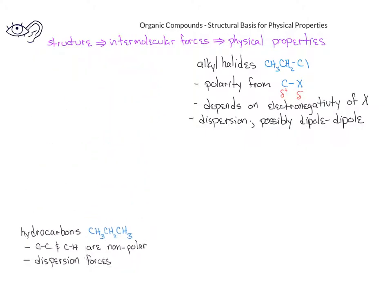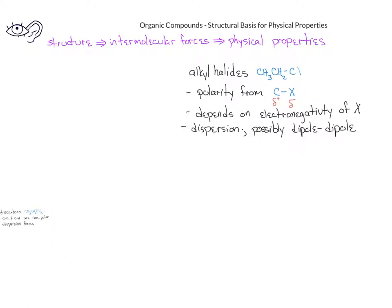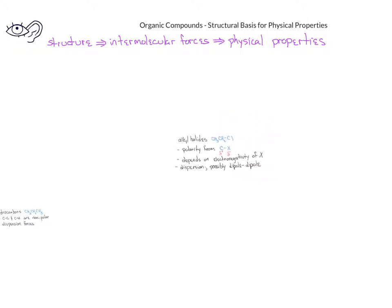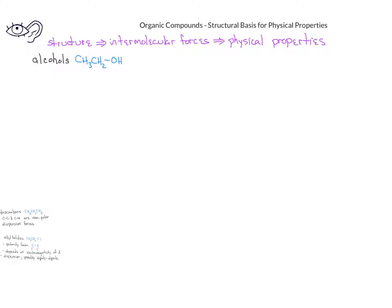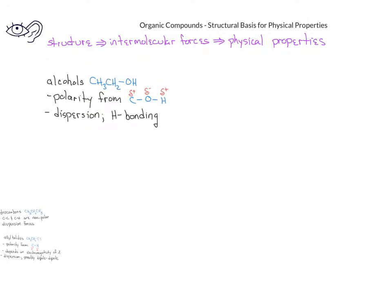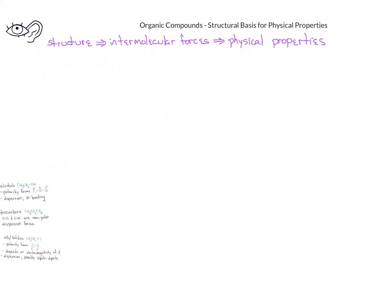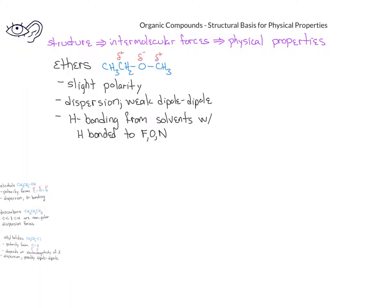Let's take a look at some other types of organic compounds — beginning with alcohols. Alcohols have carbons and hydrogens along with a hydroxyl group bonded to one of those carbons. Because of this hydroxyl group, alcohols can have hydrogen bonding between one alcohol and another, or between the alcohol and a solvent molecule such as water. Ethers also involve oxygen in their structure, but because the oxygen is not directly bonded to a hydrogen, ether molecules cannot hydrogen bond to other ether molecules. However, they could form hydrogen bonds to solvents such as water.